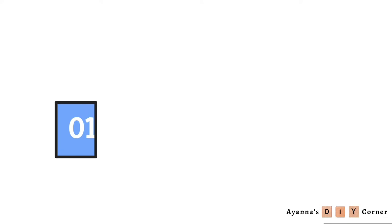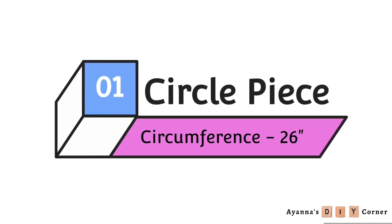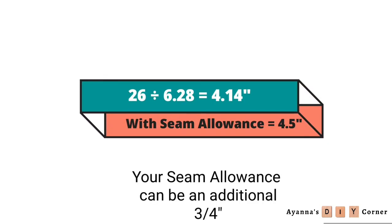Let's calculate for the circle piece first. It's basically finding the radius, so divide your circumference by 6.28. I got 4.14, and for seam allowance I made it 4.5.